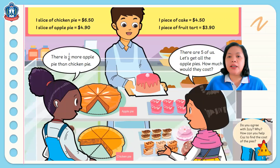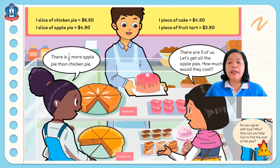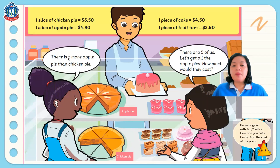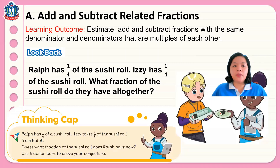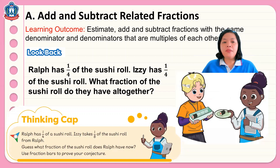I have here a picture. Take a look, children. They are in a cafe or shop going to buy some tarts or cakes. Look at the prices of each slice of the pies, cakes, and tarts. During our class, let's discuss the amount each child will spend on each item. Let's start with Lesson A: adding and subtracting related fractions. Ralph has one quarter of a sushi roll. Iz has one quarter of the sushi roll. What fraction of the sushi roll do they have altogether? We are going to add one quarter plus one quarter.